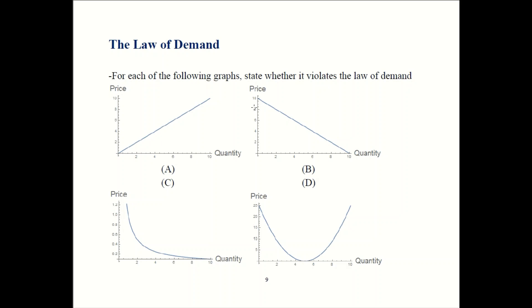For graph B, whenever price goes up, quantity demanded is going down. That follows the law of demand, so that's okay.